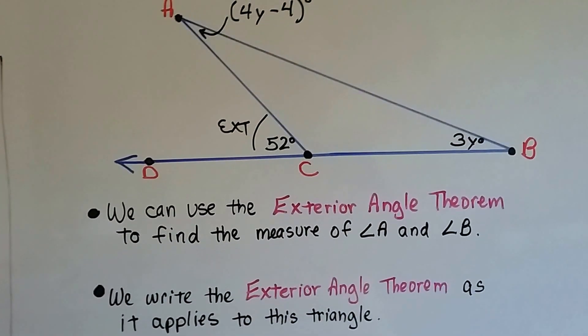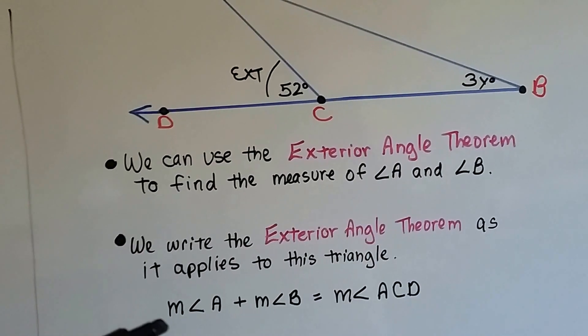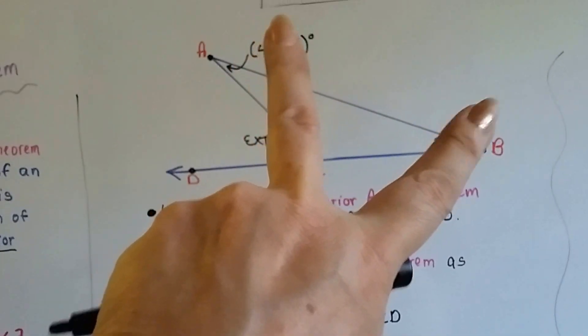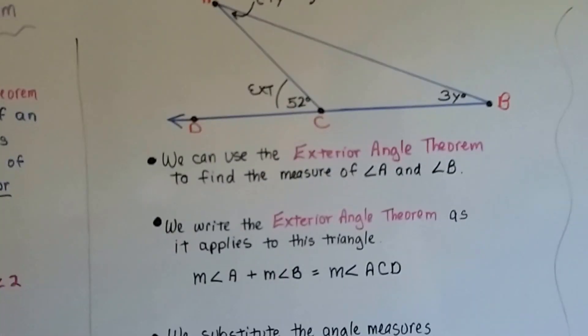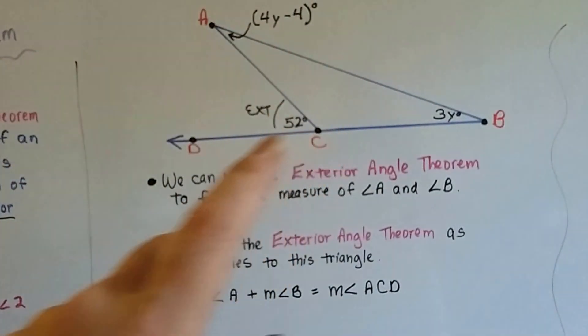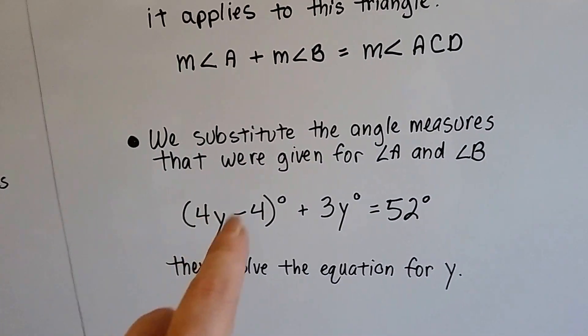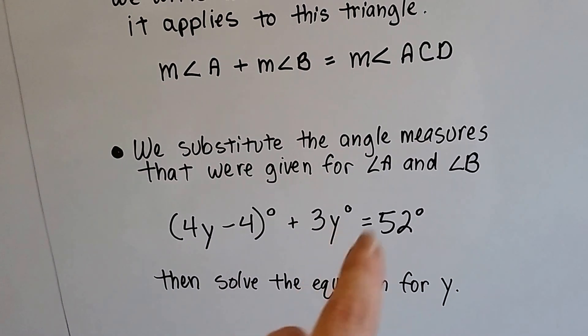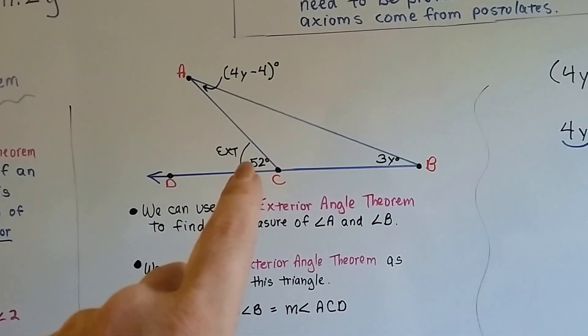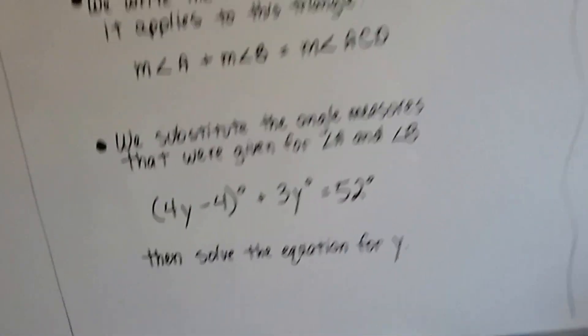So we can use the exterior angle theorem to find the measure of A and B. We write the exterior angle theorem as it applies to this triangle. So remember, the exterior measure, 52, is going to equal these two remote ones away from it. So that means the measure of angle A plus the measure of angle B is going to equal the measure of angle ACD. So we substitute the angle measures that were given for A and B, and we get 4y minus 4 degrees plus the 3y degrees is going to equal 52. Now all we have to do is solve the equation for y.